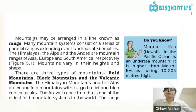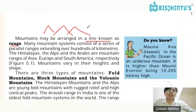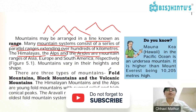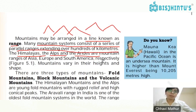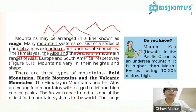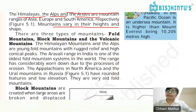Mountains may be arranged in a line, which is known as a range. Many mountain systems consist of a series of parallel ranges extending over hundreds of kilometers. The Himalayas, Alps, and Andes are mountain ranges of Asia, Europe, and South America respectively. The Andes mountains extend from north to south across almost the entire length of South America.